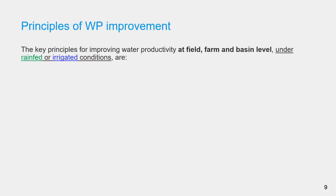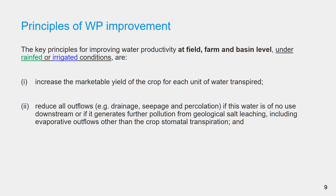The key principles for improving water productivity across scales under rainfed or irrigated conditions include, primarily increase the marketable yield of the crop per unit of water transpired, and reduce all outflows, e.g. drainage, seepage, and percolation.